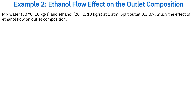Example 2. Mix water at 30 degrees Celsius with a flow rate of 10 kg per second, and ethanol at 20 degrees Celsius with the same flow rate, both at 1 atmosphere. The outlet stream is then split in a 0.3 to 0.7 ratio. Use the NRTL fluid package and study how changes in ethanol flow affect the outlet composition.